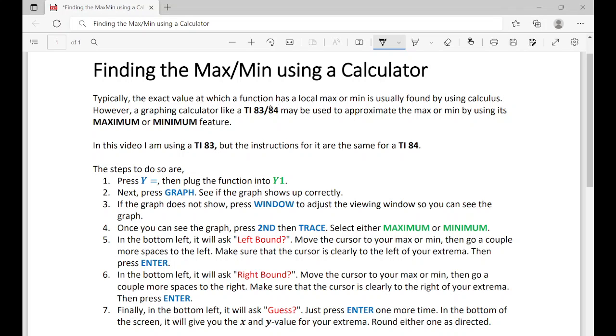Typically, the exact value at which a function has a local max or min is usually found by using calculus. However, a graphing calculator like a TI-83 or 84 may be used to approximate the max or min by using its maximum or minimum feature.